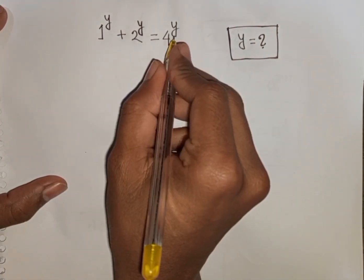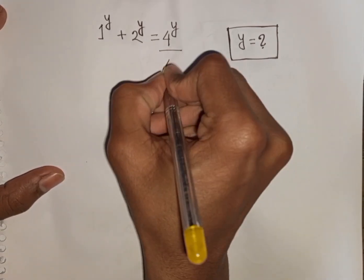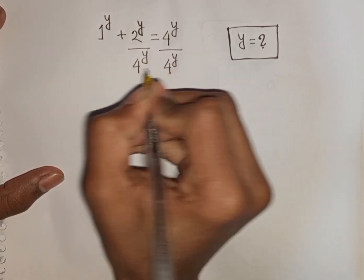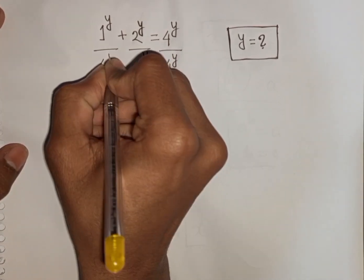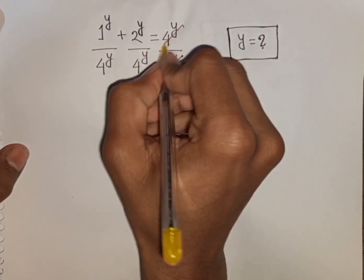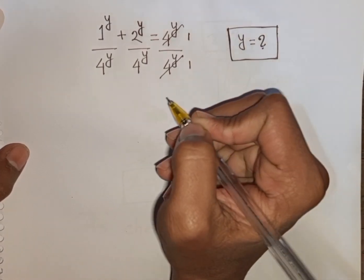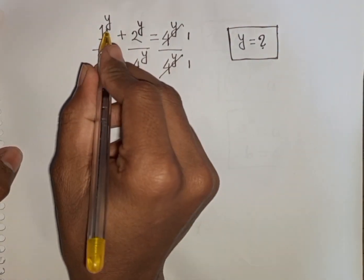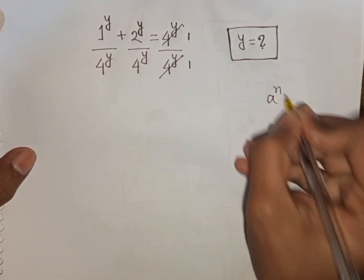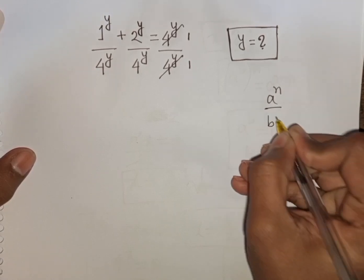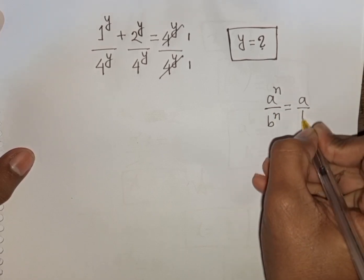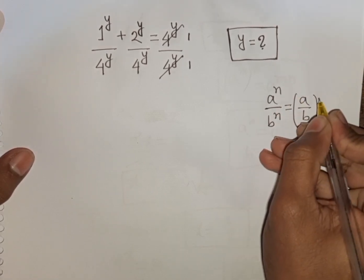At first we divide by 4 power y on both sides. The 4 power y terms cancel. Now we have same power y but different bases. Remember the exponential rule: a power n over b power n is equal to (a over b) to the common power n.